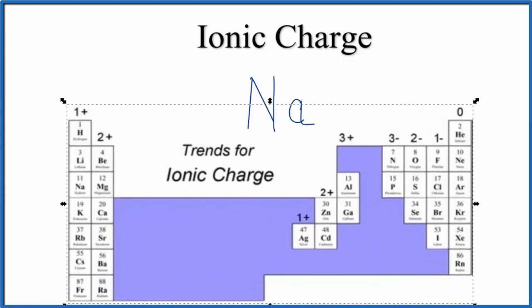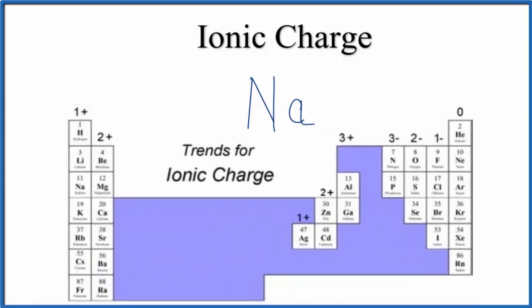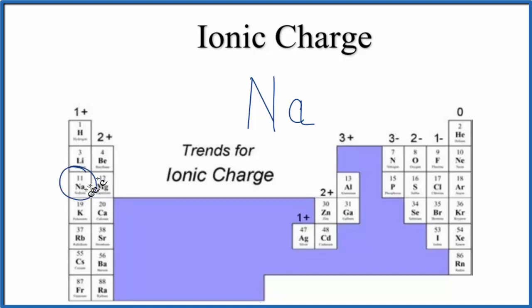On the periodic table, the charge trend follows a nice pattern. Group 1 — all of these have a 1+ ionic charge, so when they bond with other elements, they'll lose an electron and form a positive ion. We can see in Group 1 right here is sodium. So sodium is going to have a 1+ charge — often we just write plus.